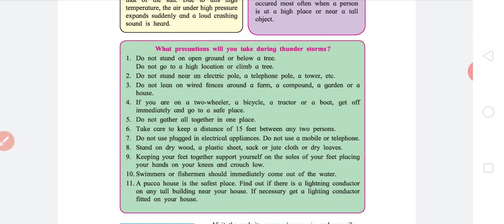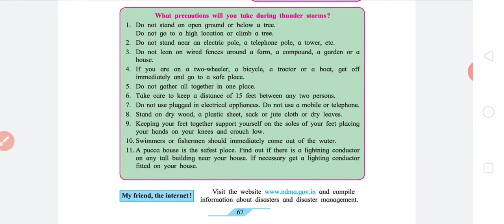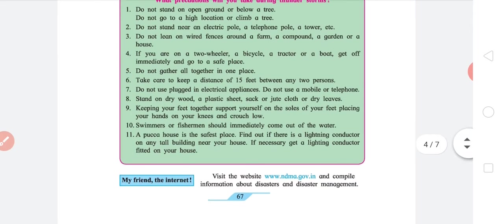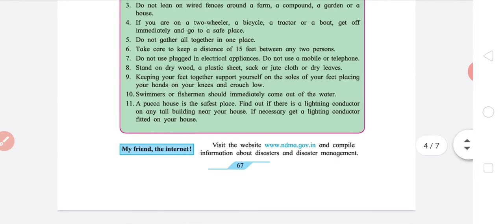Generally if you are on any two-wheeler or any such vehicle, chances are you're on an open road. Try to find shelter as soon as possible. Fifth, do not gather all together in one place, unless that's a closed shed. In open space, a serious no. Take care to give a distance of 15 feet between any two persons because if one person gets a shock, the other person might get a shock. Seventh, do not use unplugged electrical appliances. Because in lightning strikes, the high charge tend to affect the electronic charges first. Do not use a mobile or telephone because the electricity disturbs the signals of mobiles.